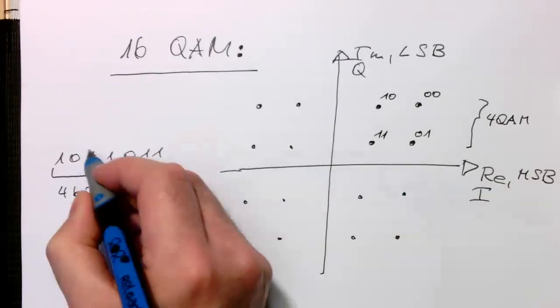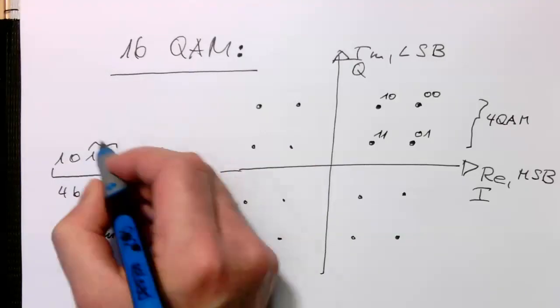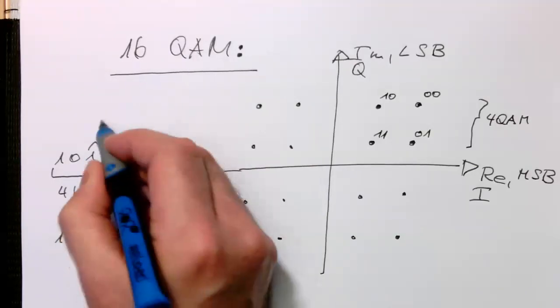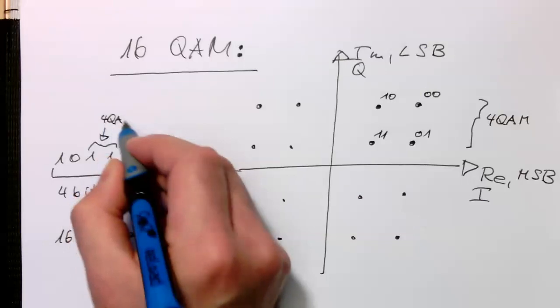And so, so let's say these two bits, they are just essentially the 4 QAM component here.